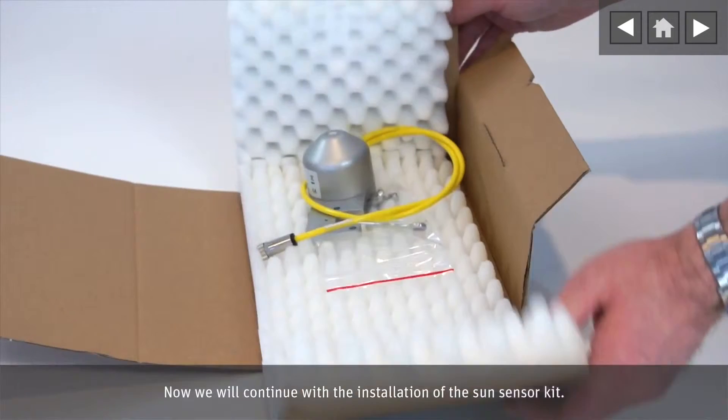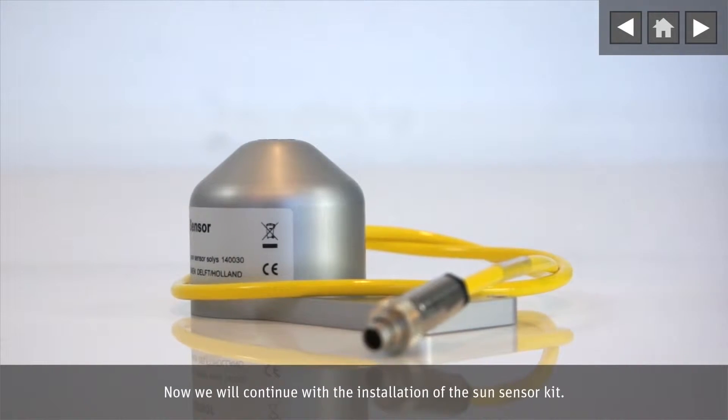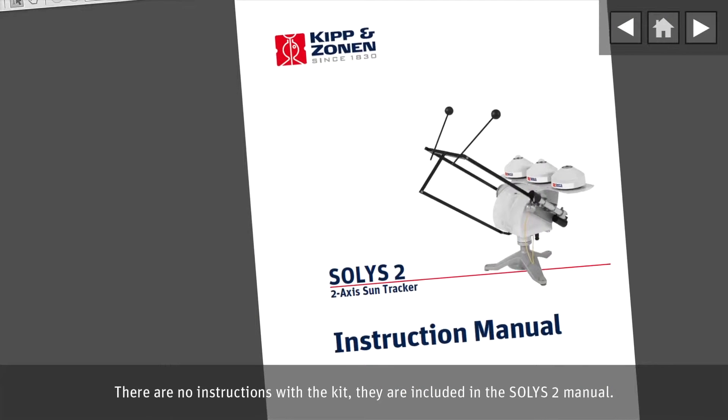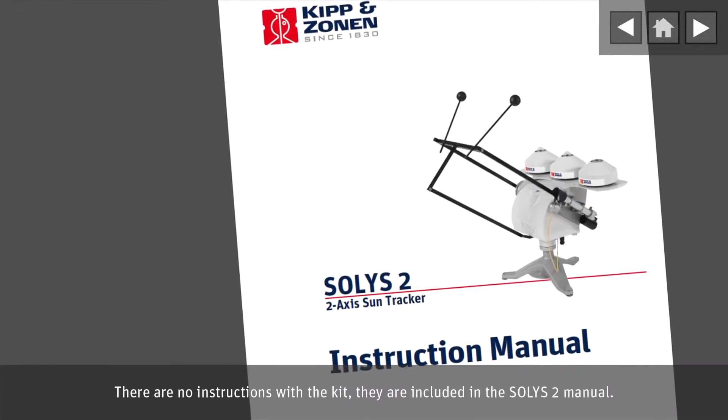Now we will continue with the installation of the Sun sensor kit. There are no instructions with the kit; they are included in the SOLUS 2 manual.